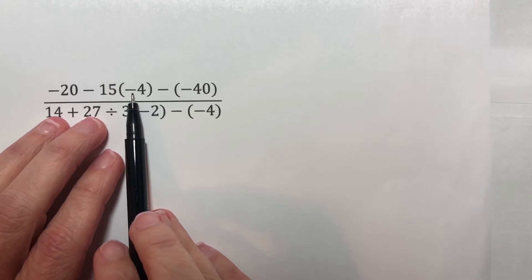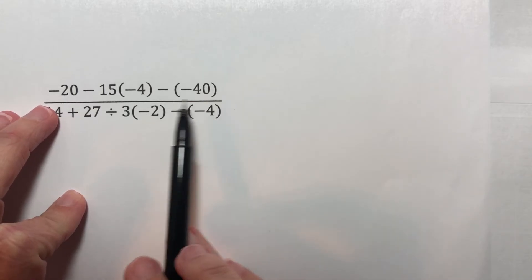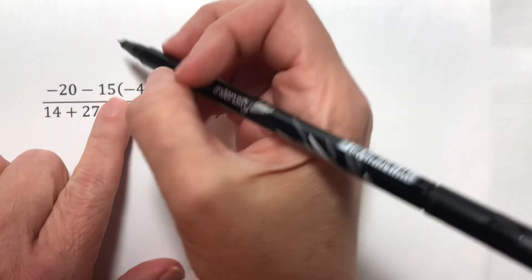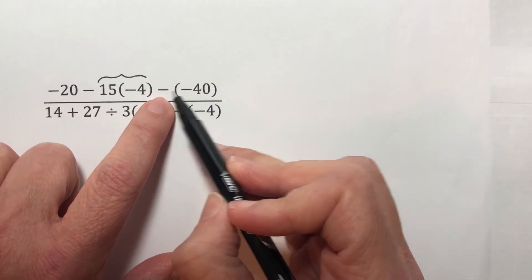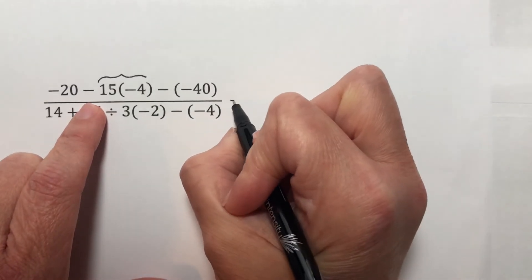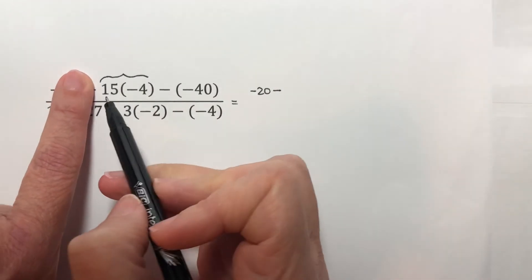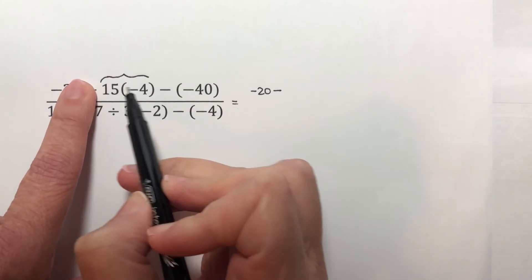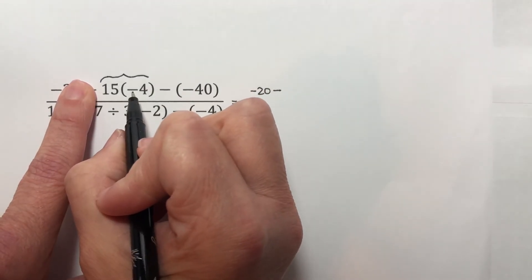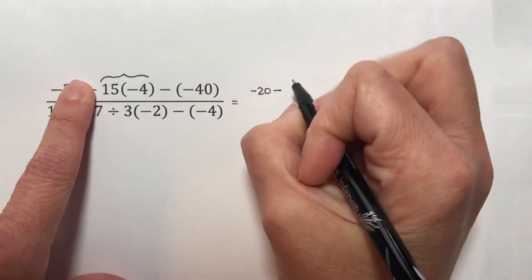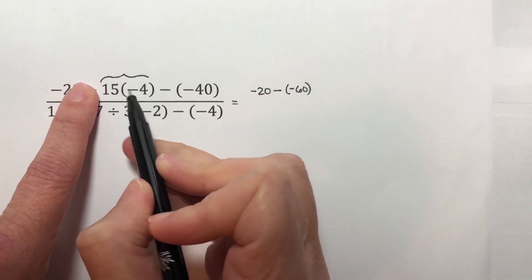The next thing to do would be to deal with exponents, and we don't have any. Then we deal with multiplications and divisions. This is a subtraction and this is a multiplication right here, minus a negative number. So all we can do right here is: I have negative 20 minus — this minus sign — so I'm going to do positive 15 times negative 4. 15 times 4 is 60, and it's going to be a negative number, so this is negative 60.